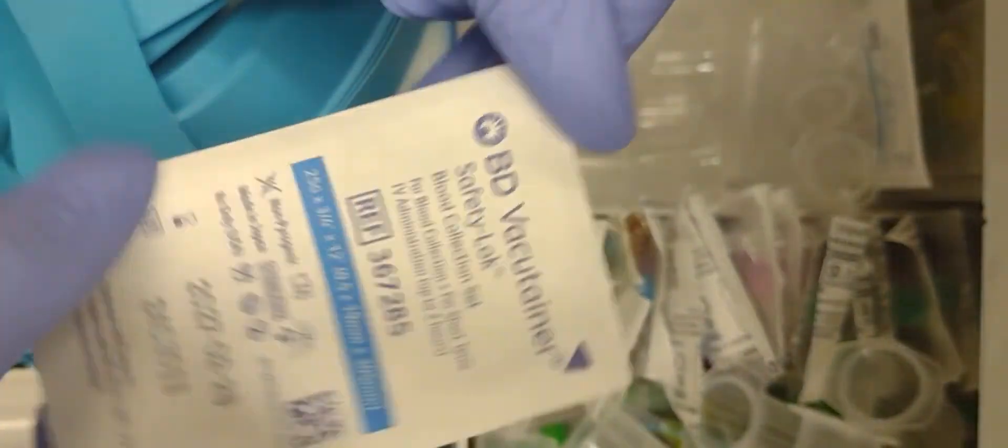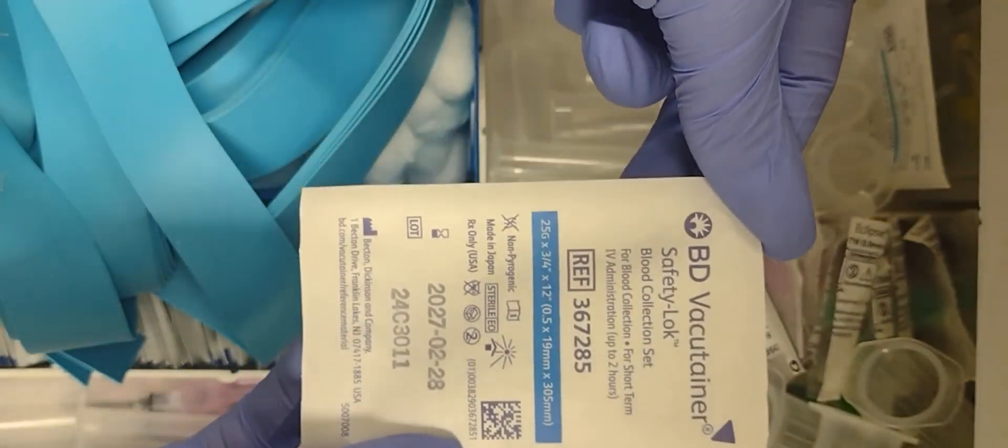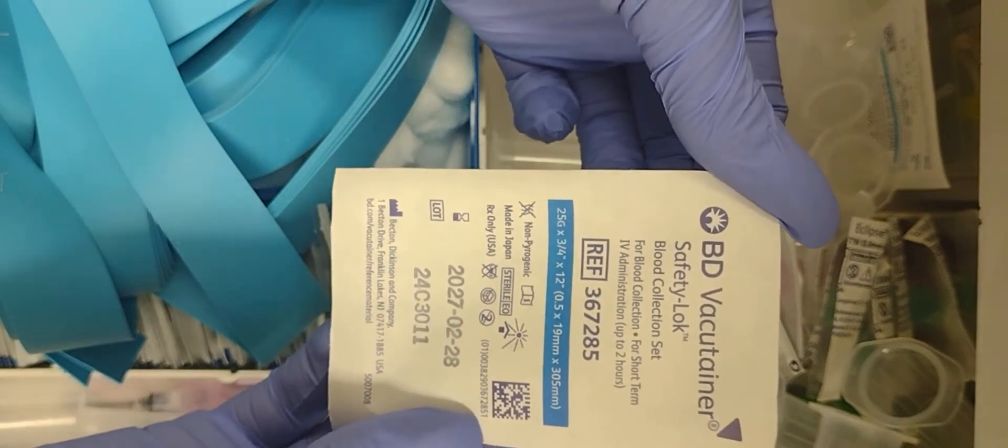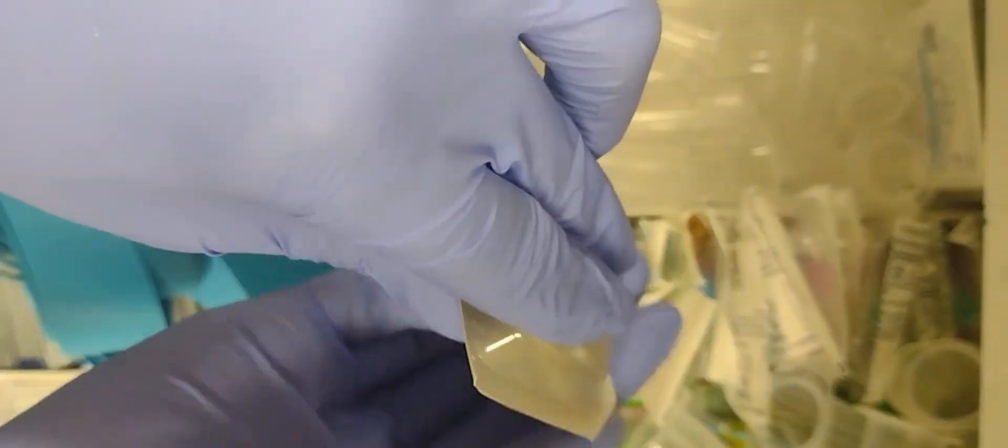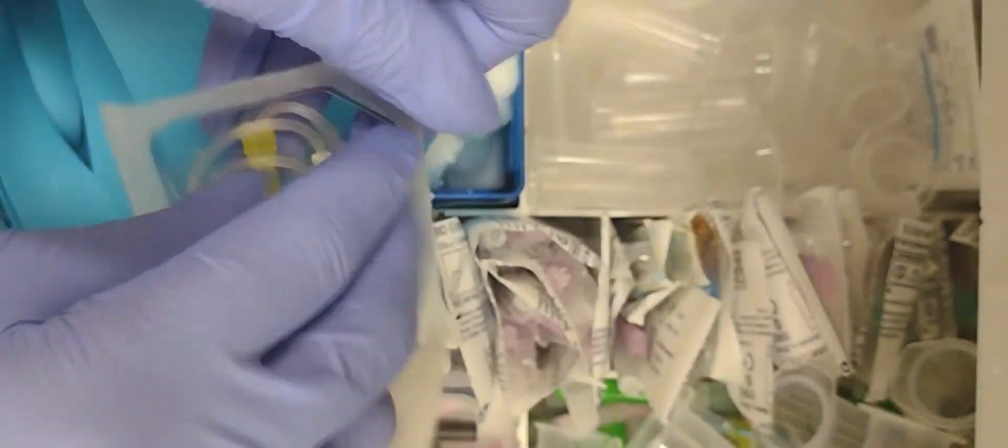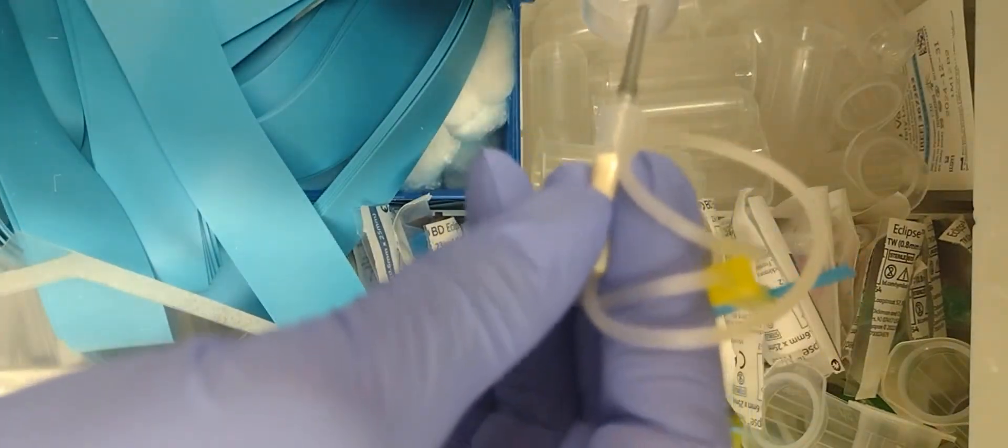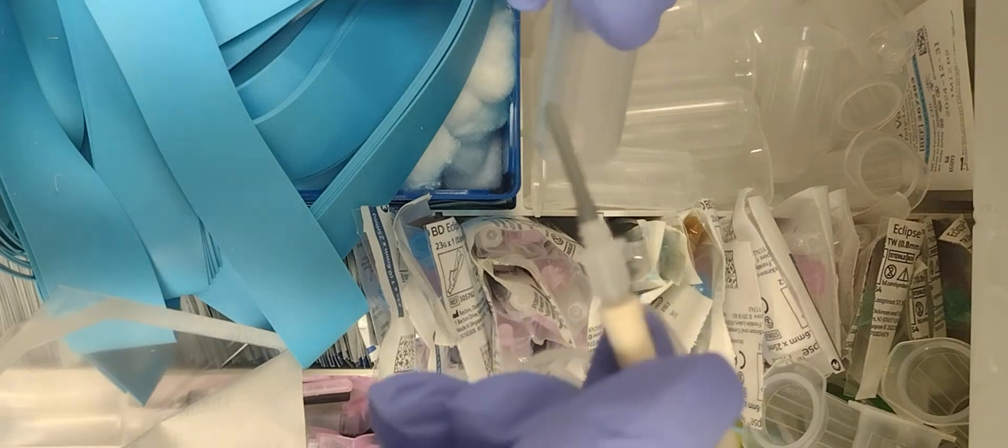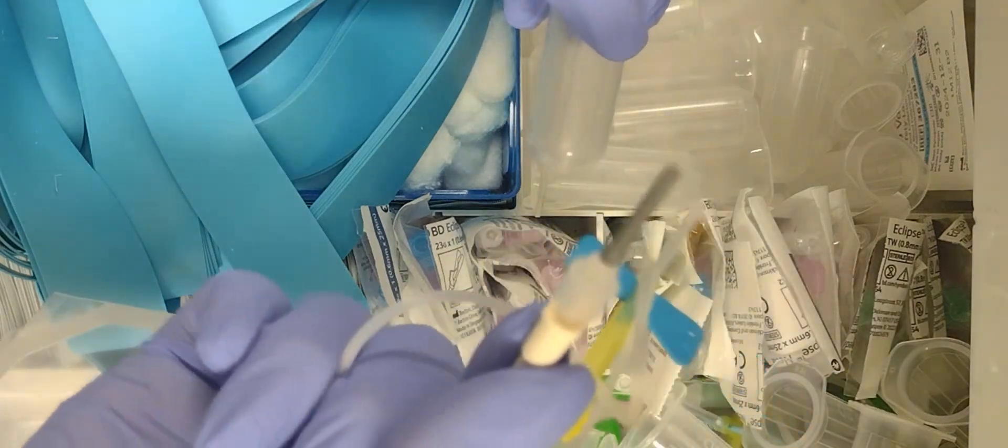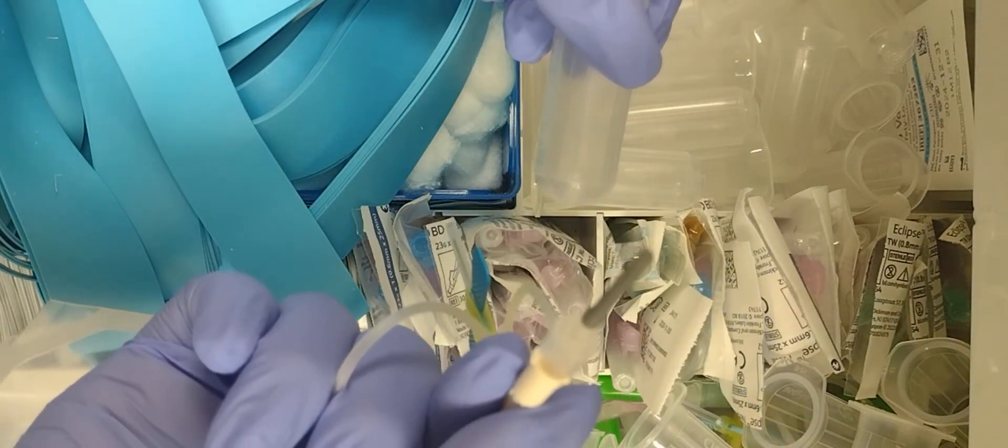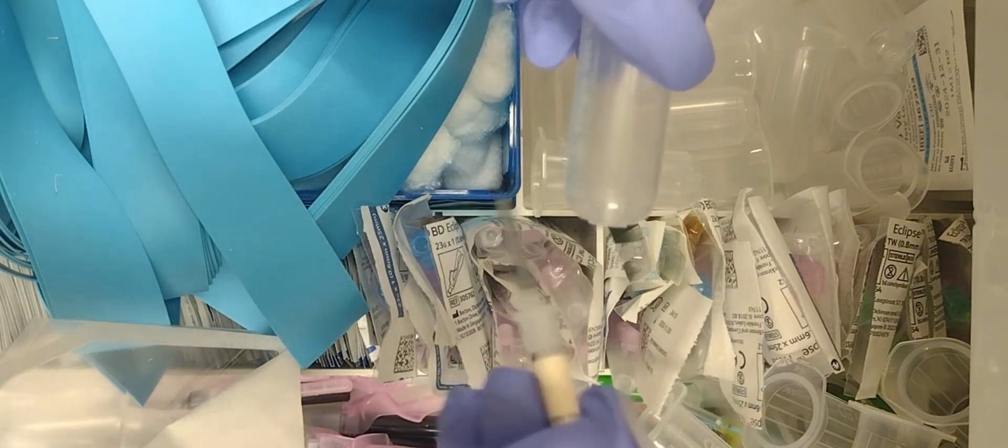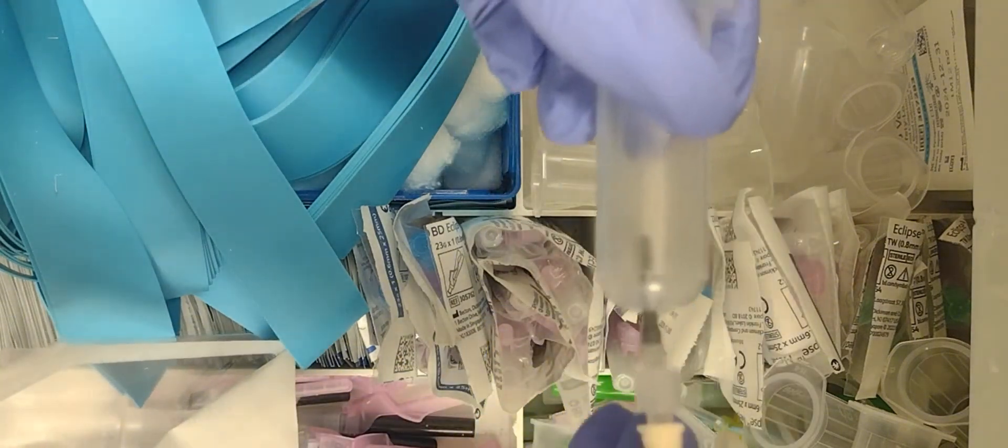All right, next we're going to do a 25 gauge butterfly vacutainer needle. So here's the hood. Once again, here's the needle that's going to be attached to the hood. So what are you doing? Just twisting it on.